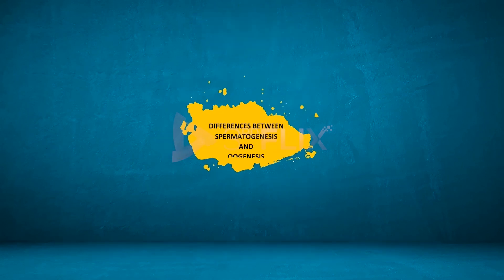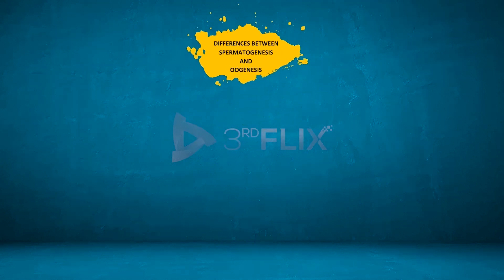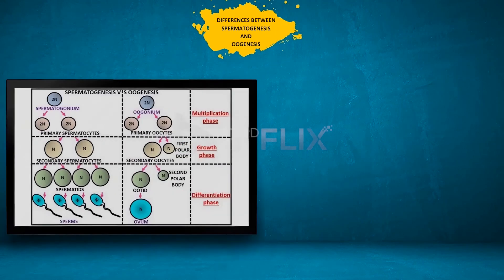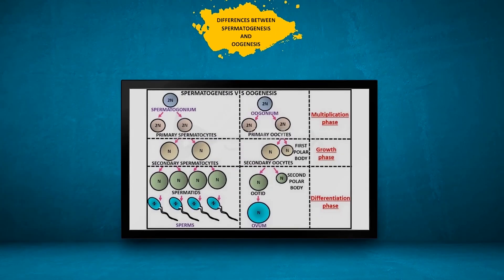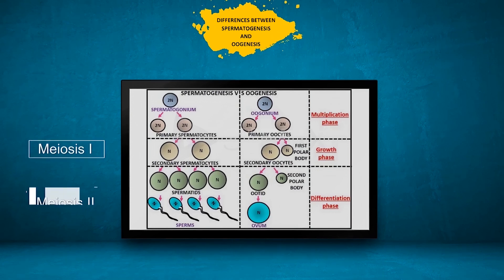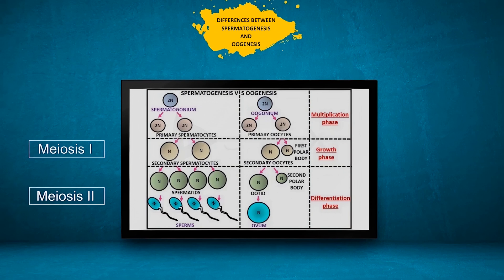Differences between spermatogenesis and oogenesis: In spermatogenesis, four haploid functional sperms are produced, whereas in oogenesis only one functional ovum is produced. In spermatogenesis, both meiosis I and II are equal divisions, whereas in oogenesis, both are unequal divisions.